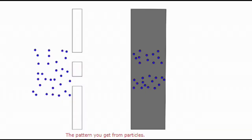Now if we take a look at the wall, we would see a left and a right band corresponding to where the particles that pass through the left and right slits hit the wall. This pattern of two bands is called a blot pattern.